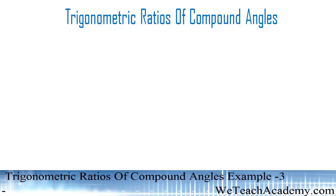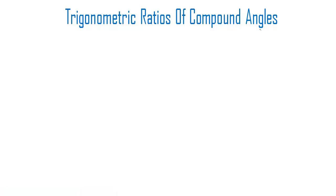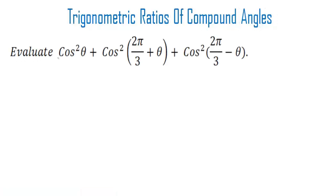Welcome to vteachacademy.com. In this presentation we are going to discuss an example on trigonometric ratios of compound angles. The given example is: evaluate the value of cos²θ + cos²(2π/3 + θ) + cos²(2π/3 − θ).